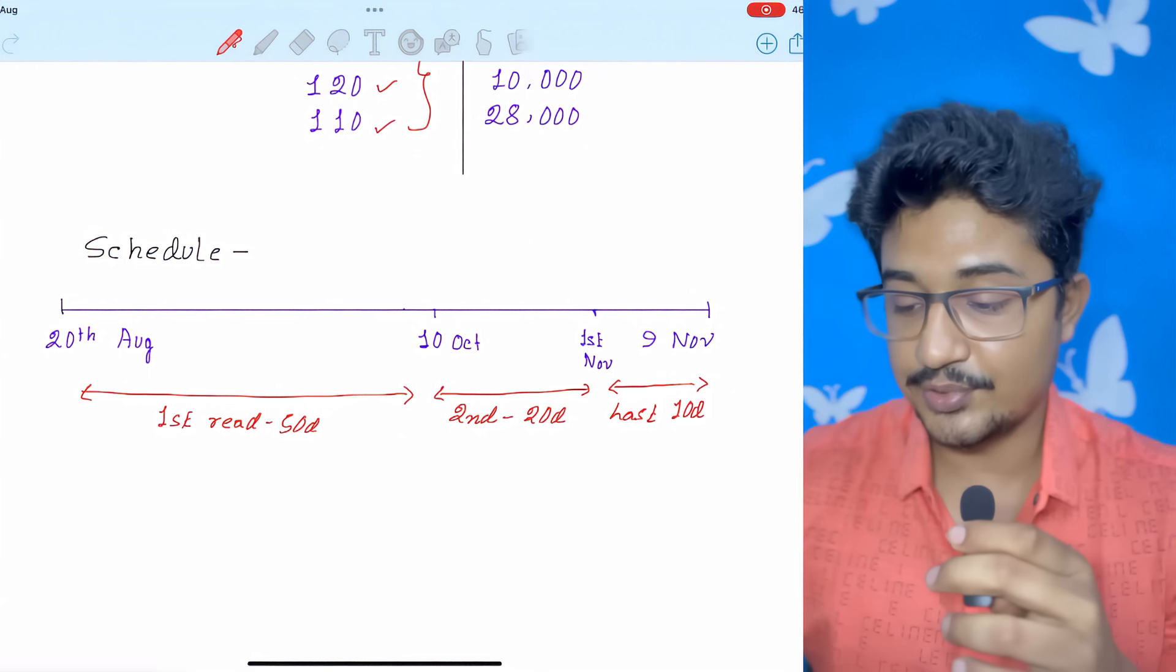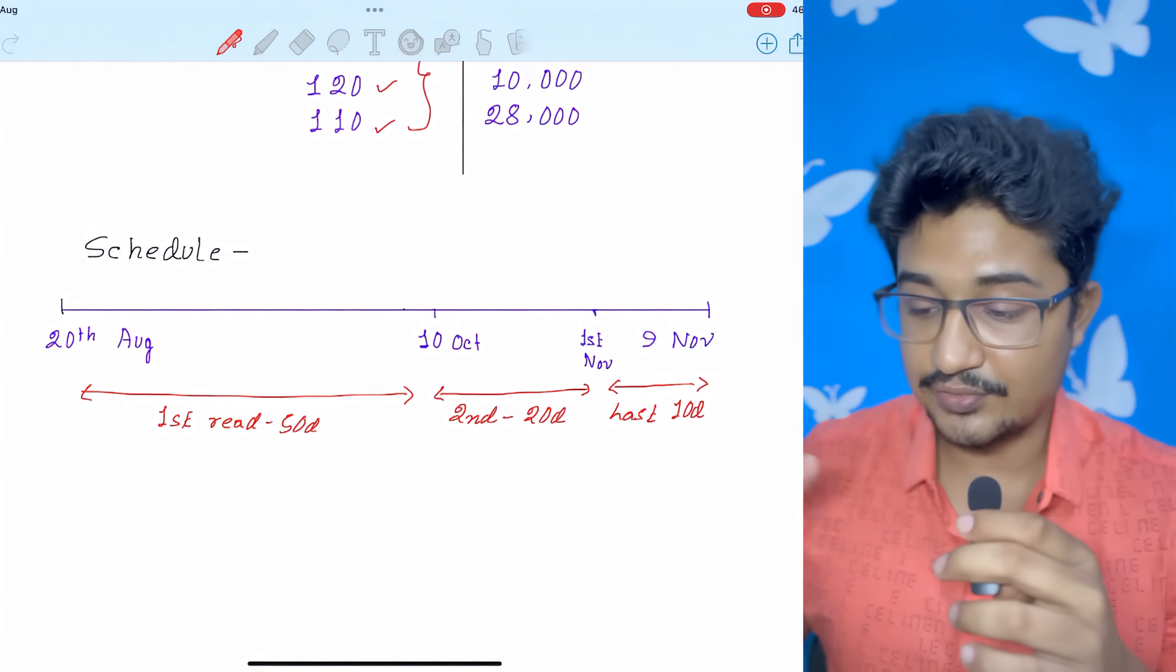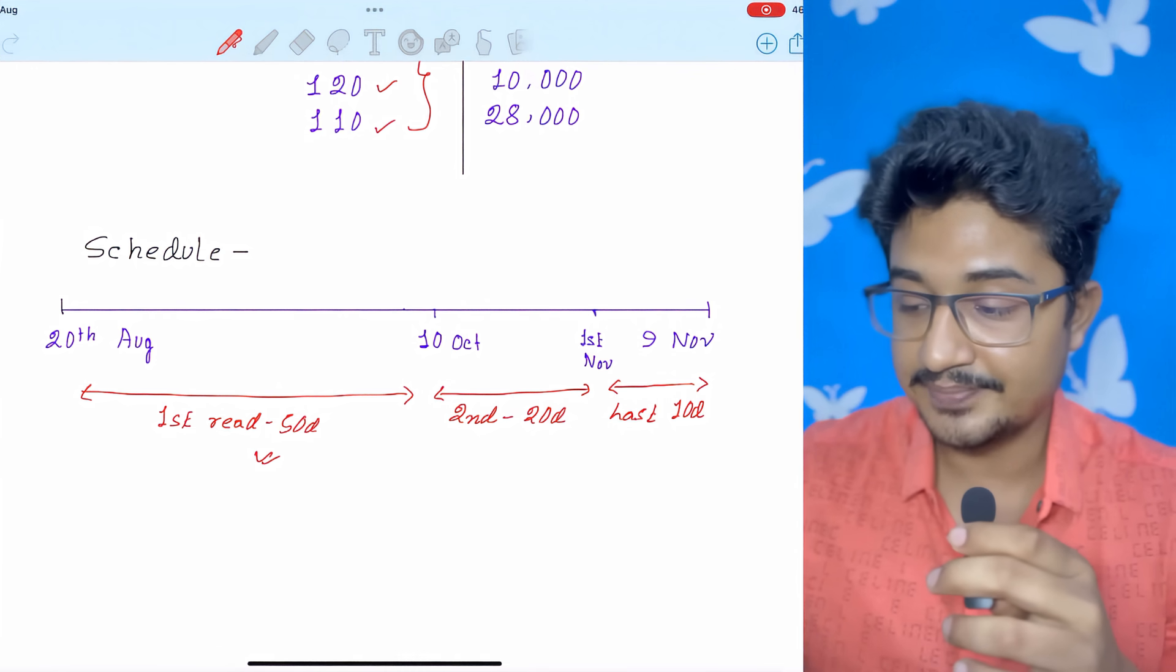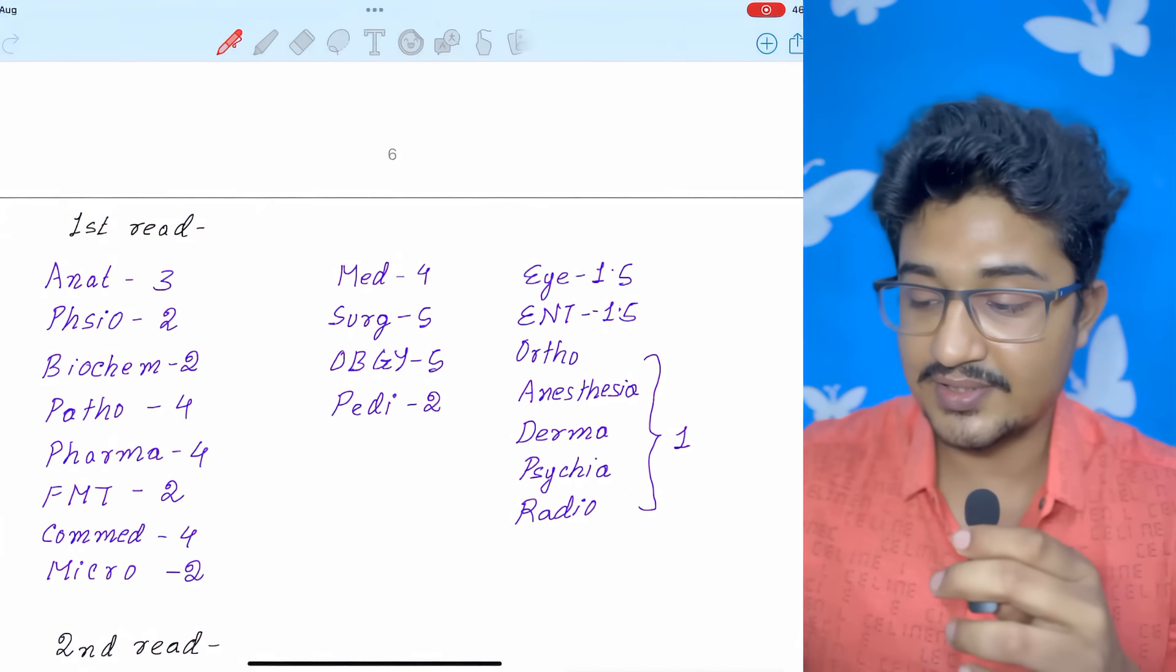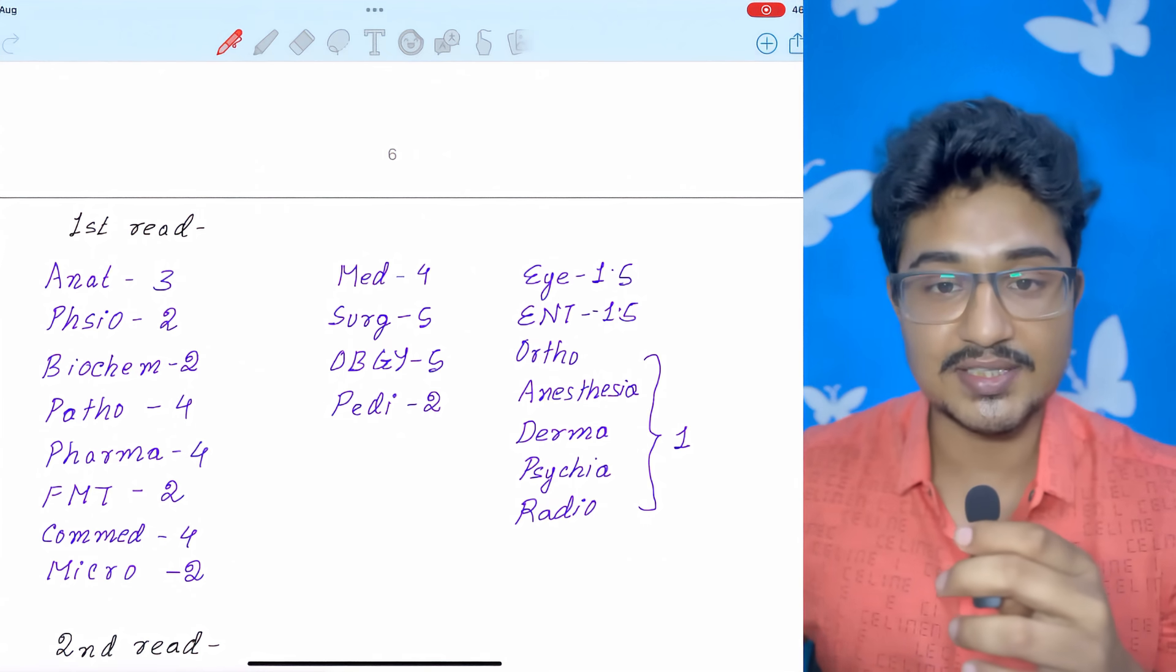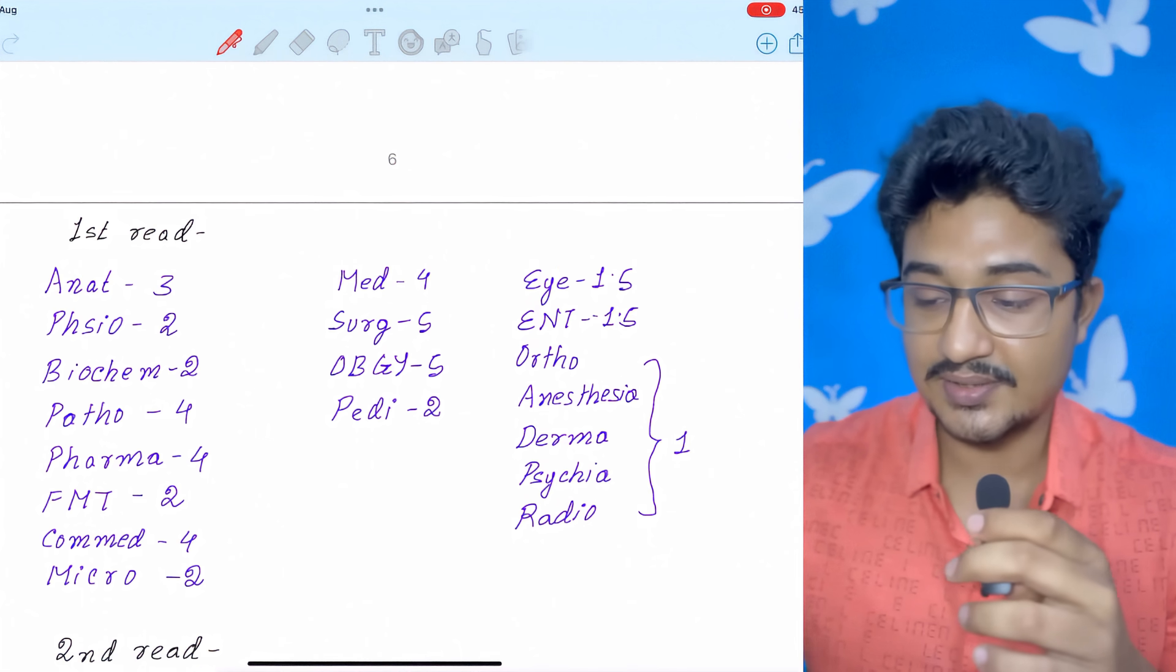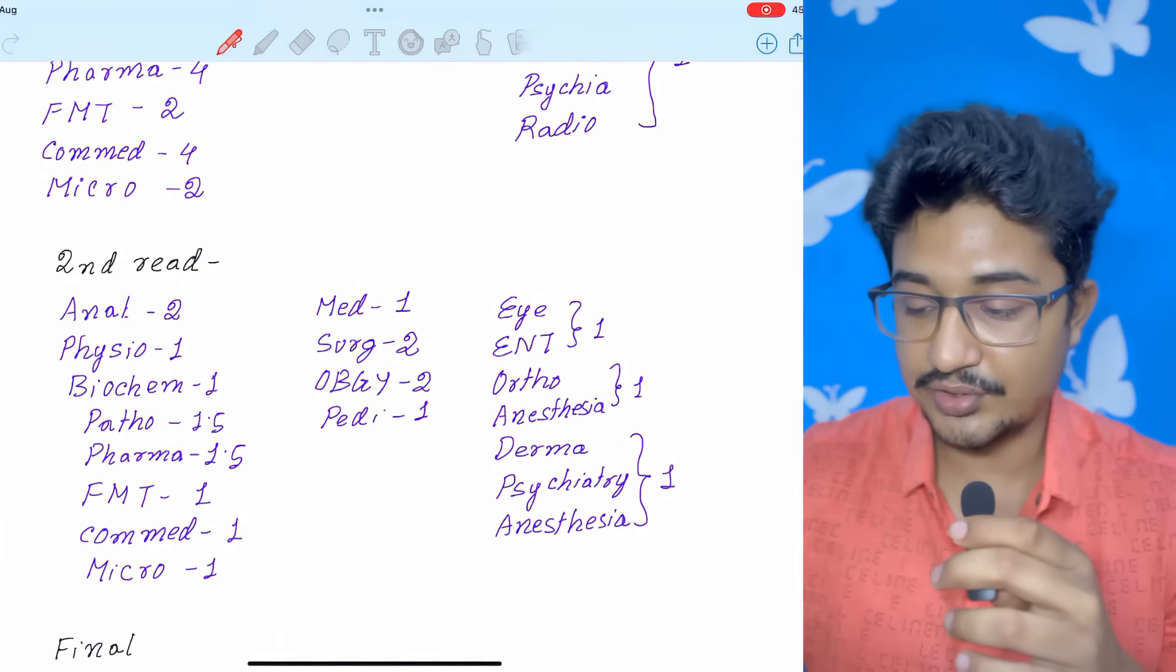Schedule, if I have to say, if you are watching this video on 20th of August, then 20th of August to 10th October for first read 50 days. Second read you will do for 20 days up to 1st November and the last 9 days preparation. First reading, this is the basic. You must give the dedicated number of days for studying each subject. You can have your own, but if you don't have, then you can follow this. This is for the first read that is of 50 days. You can take a screenshot.